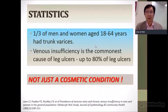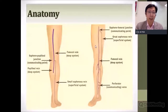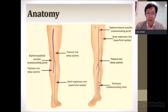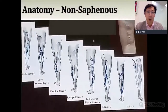Varicose veins are not just a cosmetic condition. There are many risk factors. Looking at the anatomy, we have a deep venous system and a superficial venous system. The long saphenous vein runs down the medial aspect of the leg anteriorly, and the short saphenous vein runs from the popliteal vein down to the foot at the back of the leg. Not all varicose veins are of truncal origin — they can originate from various different areas in the leg.